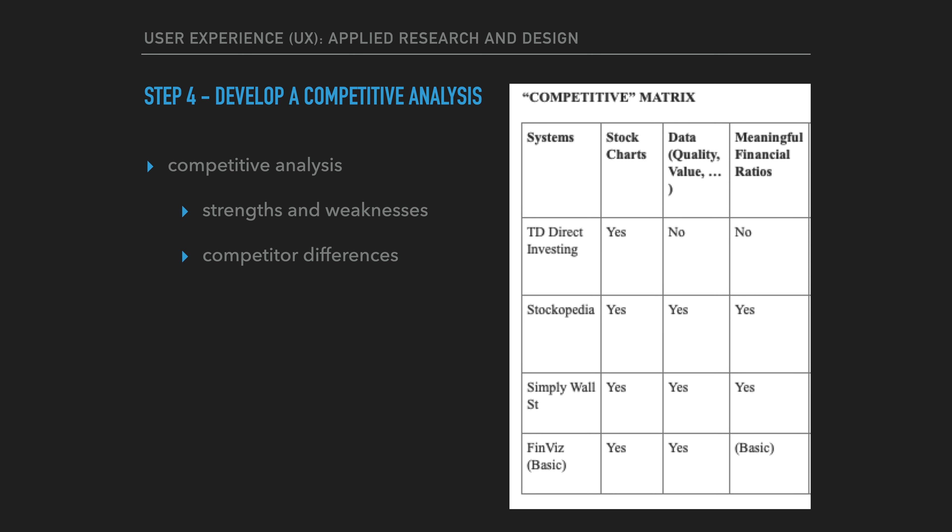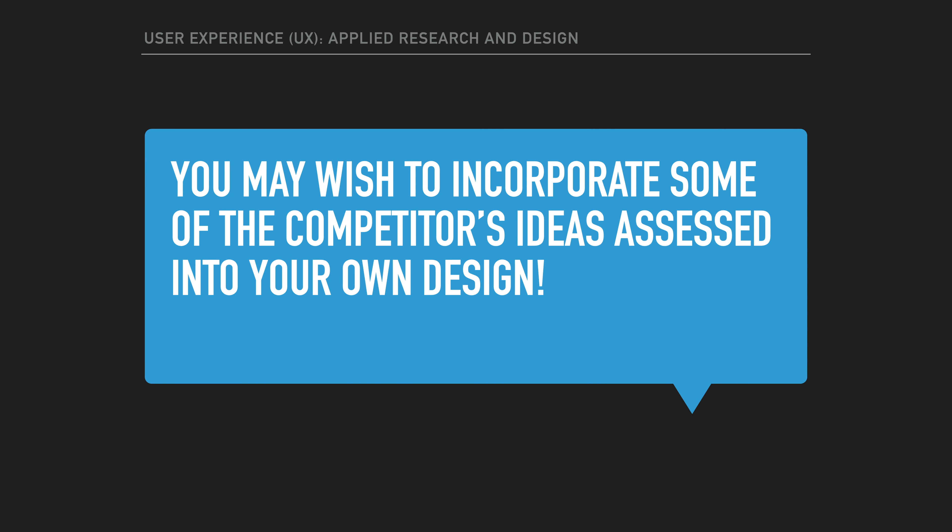A two-dimensional table can be used to highlight competitor differences along the key metrics. Typically, you want to analyze and compare between three and four competitors. The analysis helps shed light on the most useful features, functions, design strengths, and design weaknesses of competitors. You may also wish to incorporate some of the competitors' ideas into your own design.